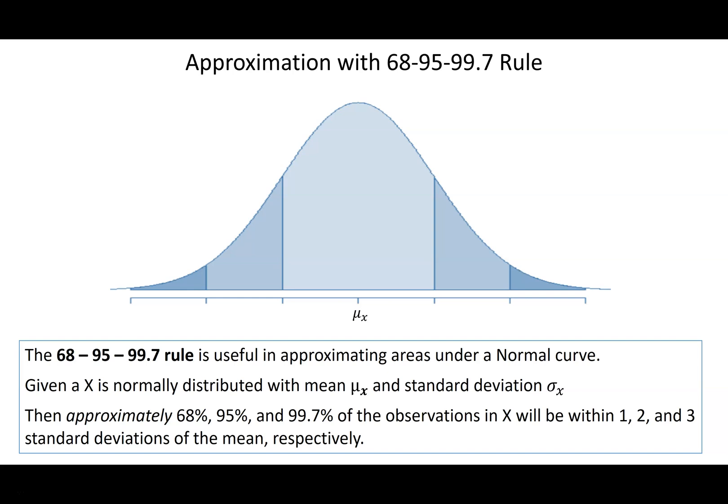So this is a really handy little rule here. I've heard it called the 68, 95, 99.7 rule, and that's quite a mouthful. I've also heard it called the empirical rule. Whichever you call it, we're totally fine with either.